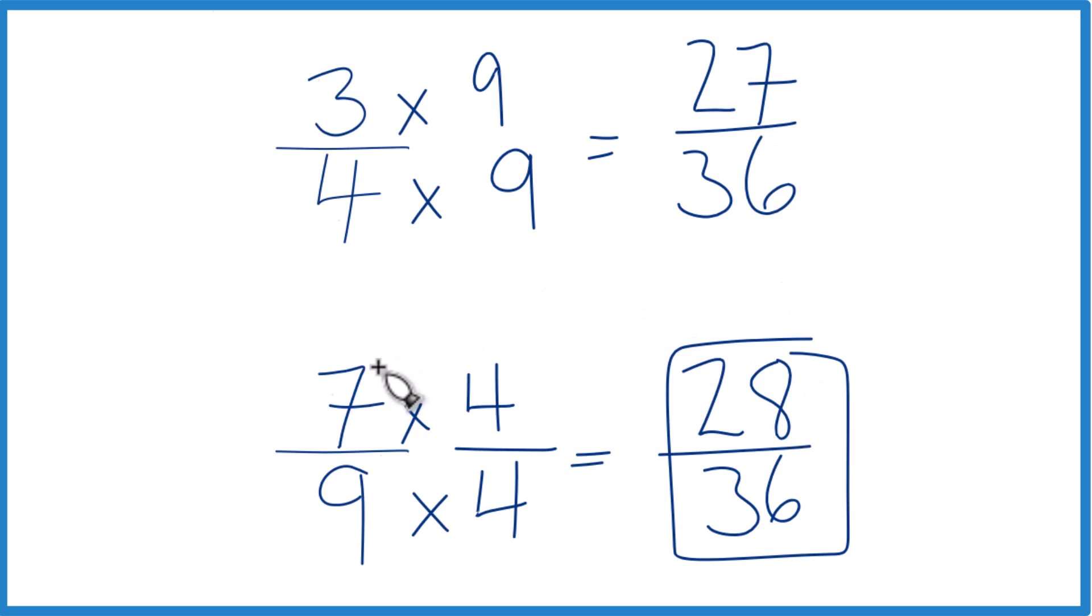Since these are equivalent and these are equivalent, 7 ninths, that's larger than 3 fourths.